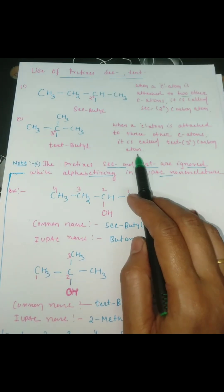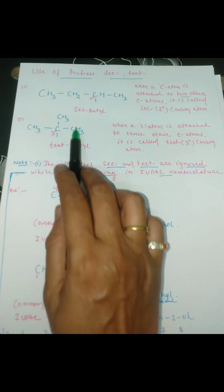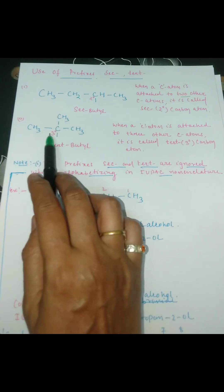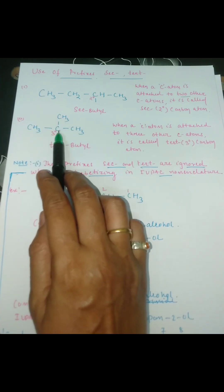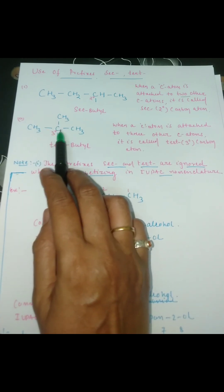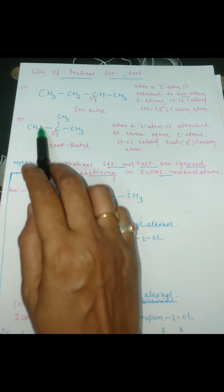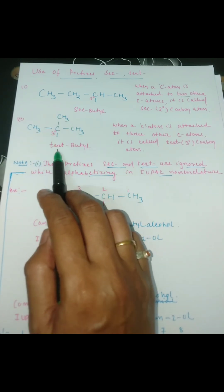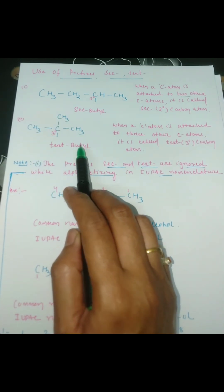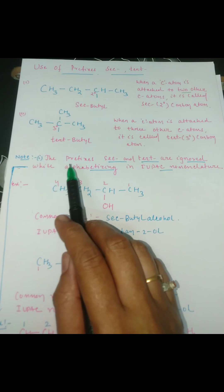Similarly, when a carbon atom is attached to three other carbon atoms, it is called a tertiary carbon atom. Here is an example of a compound where there are four carbon atoms in total, and the central carbon is a third-degree carbon attached to three carbon atoms on three sides. So the name of this compound is the tertiary butyl group.